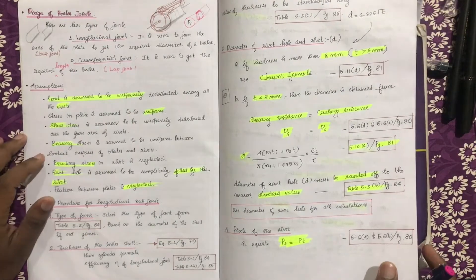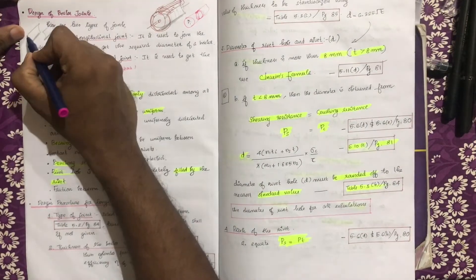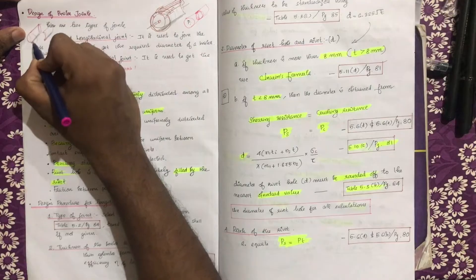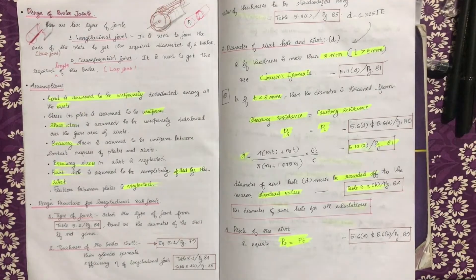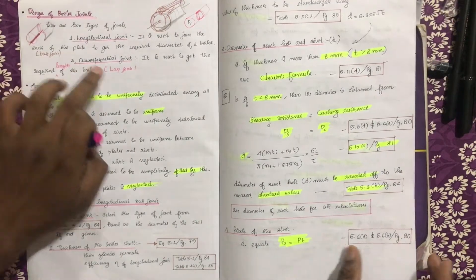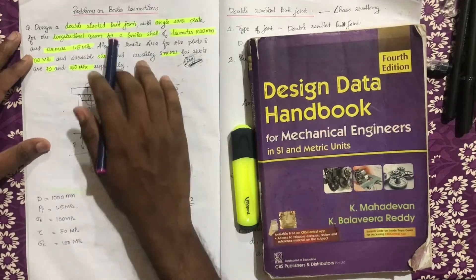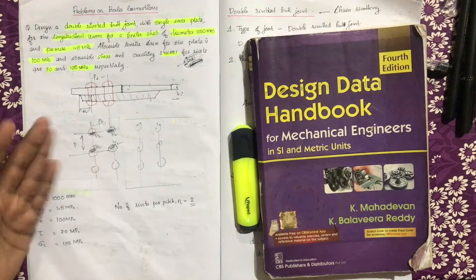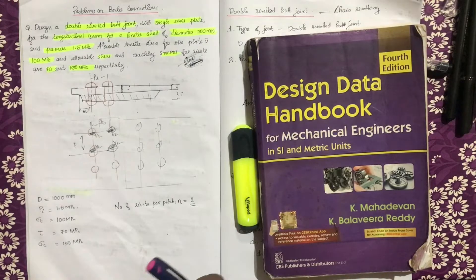The longitudinal joint and the circumferential joint: the butt joint is used for longitudinal joints and the circumferential joint uses lap joints. We normally do chain riveting with boiler connections, but there are problems with the butt joint. We are learning about the design procedure and the thickness of the main plate.